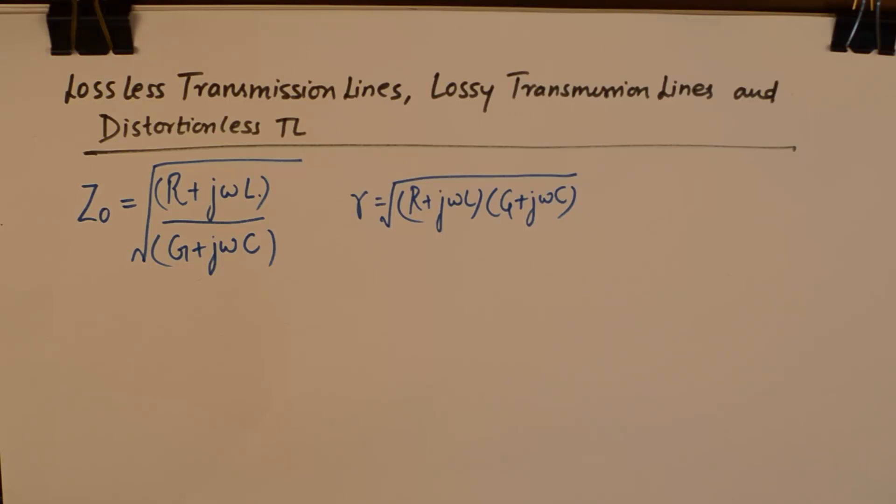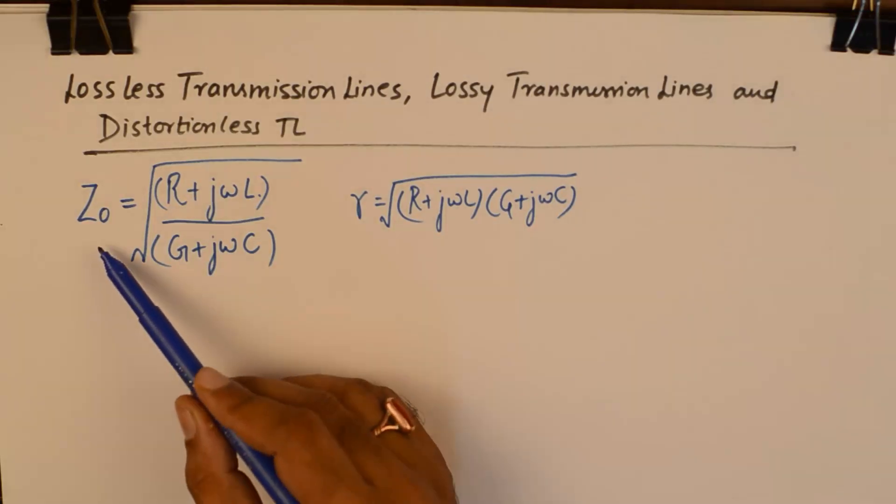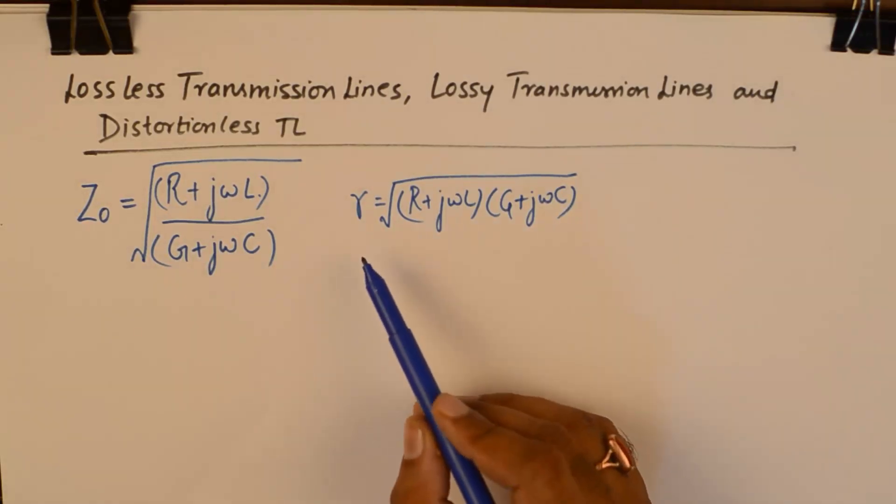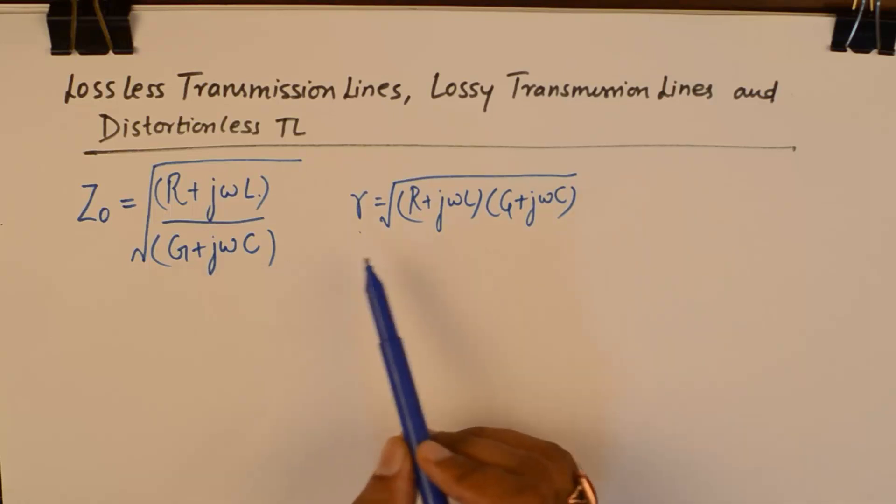Recapitulating the formulas for characteristic impedance and propagation constant: the characteristic impedance is given by Z₀ and propagation constant is given by γ. The formulas are written over here.